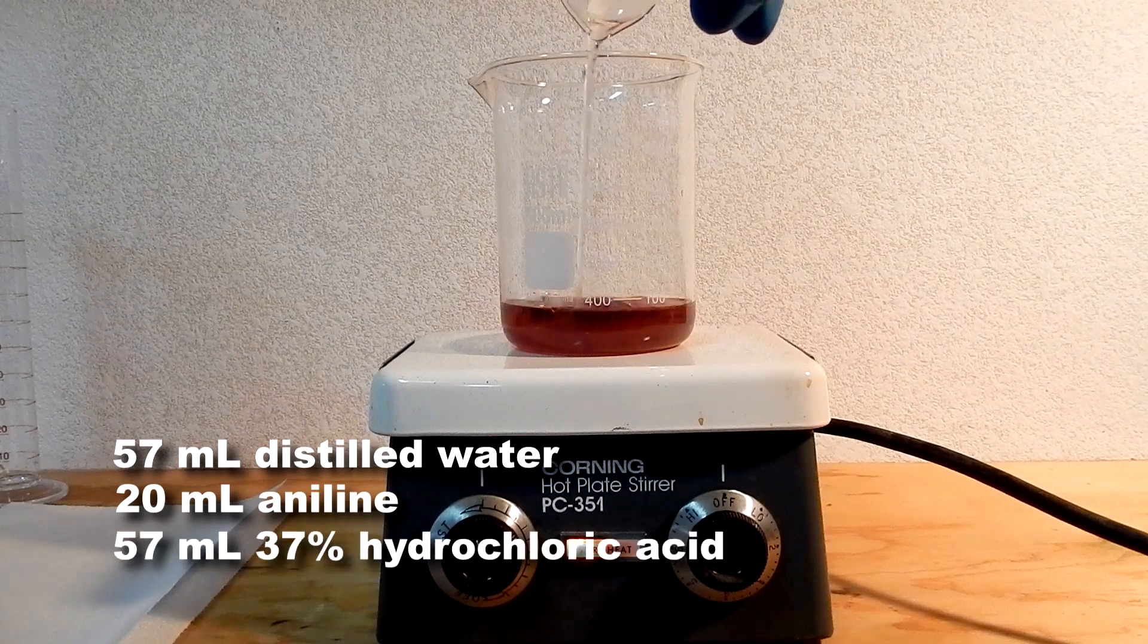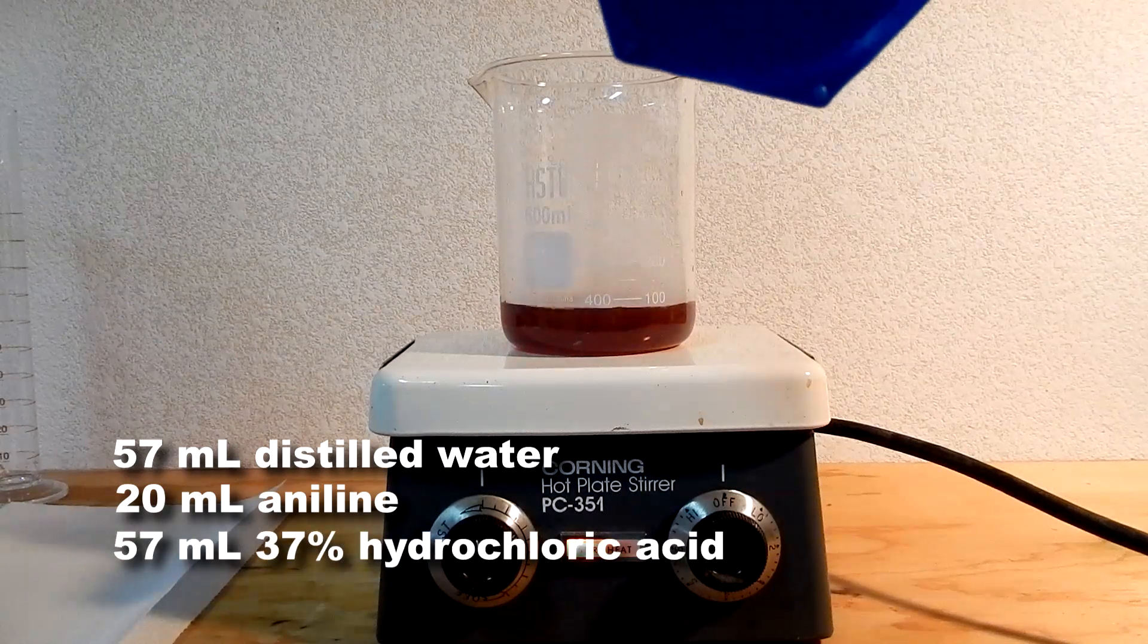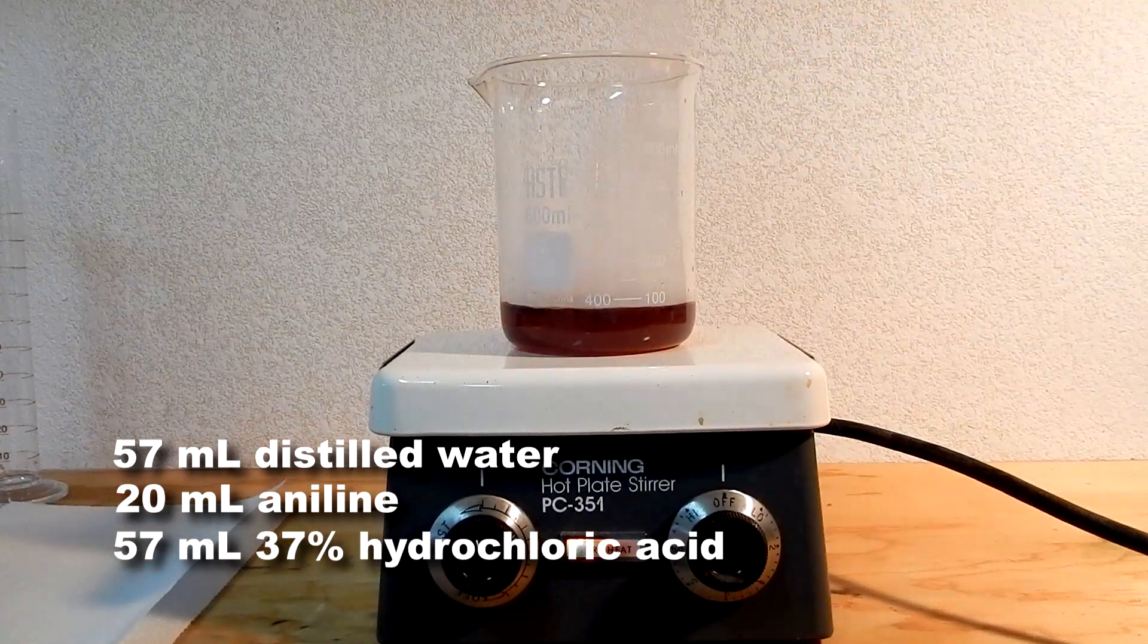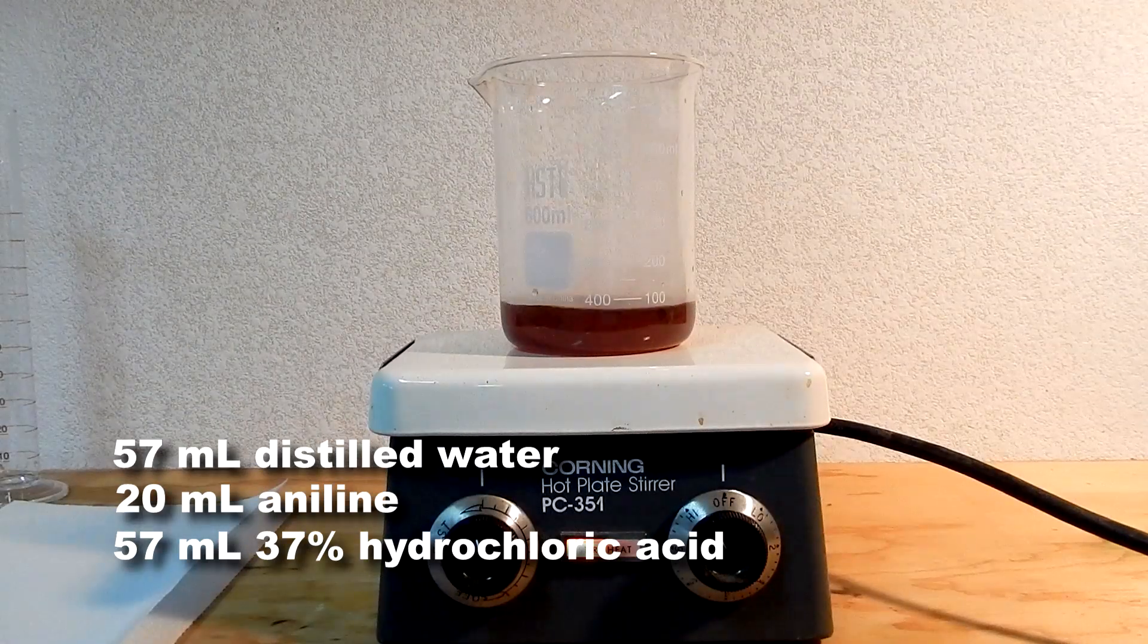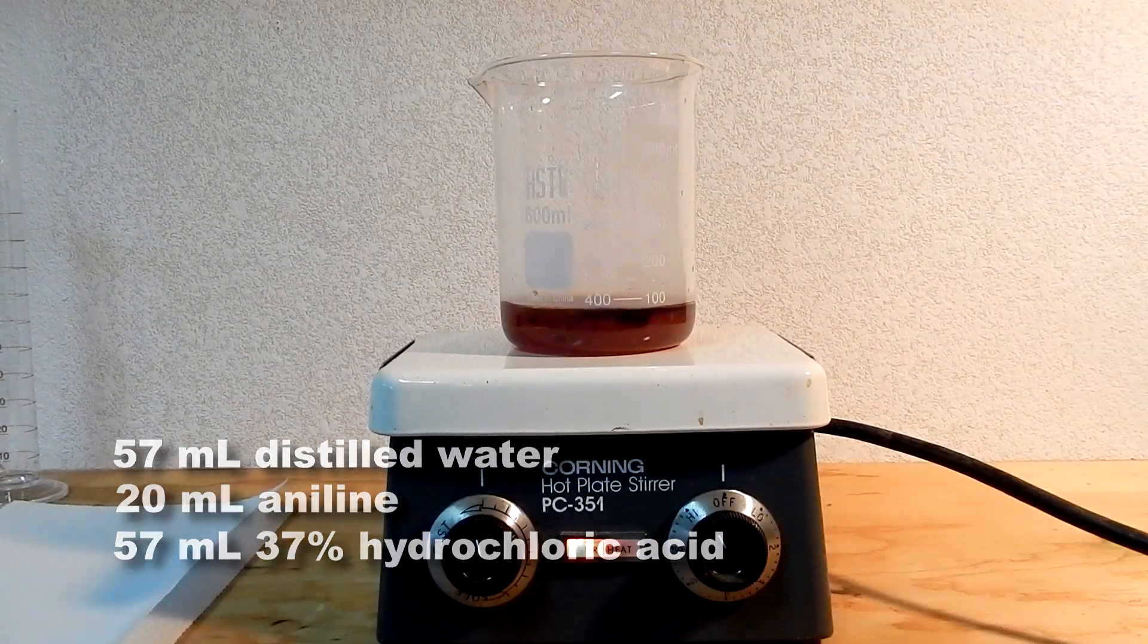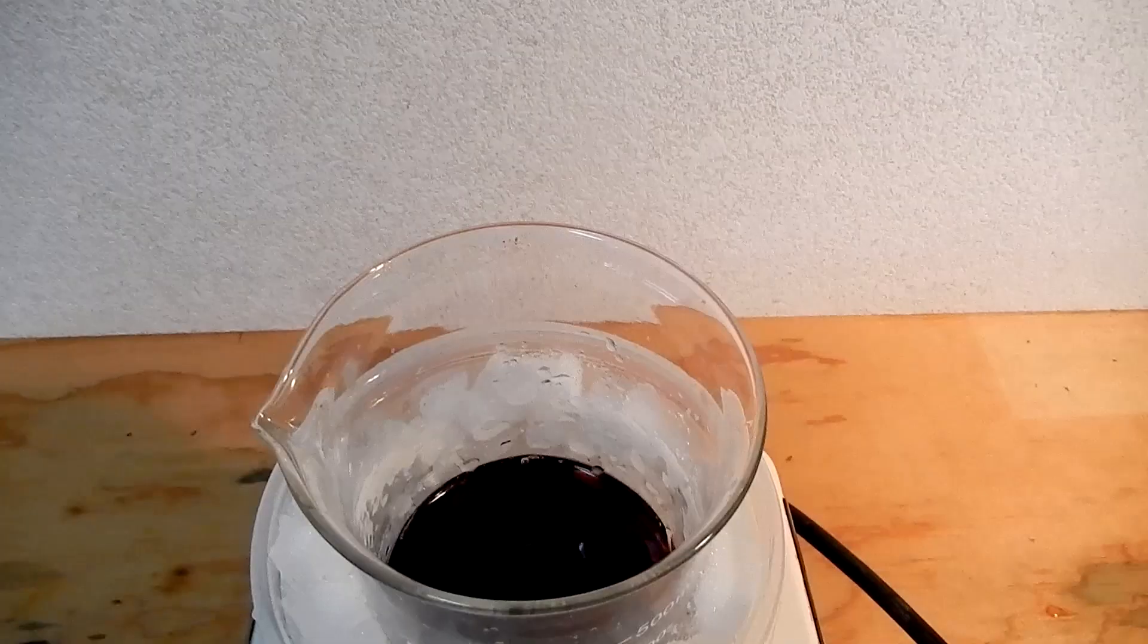Once they are mixed, slowly add 57ml of 37% hydrochloric acid to the beaker in small portions. Small amounts of white fumes will be released.